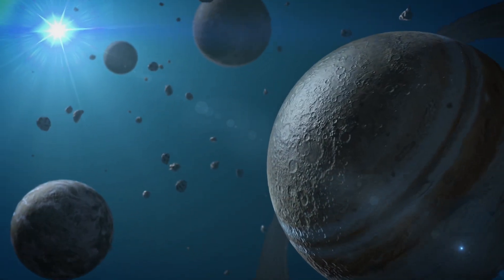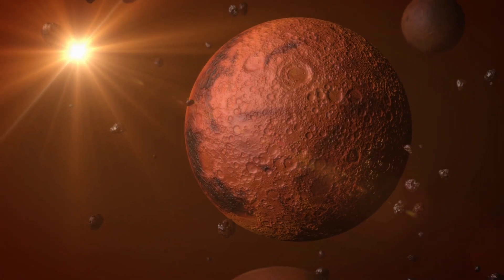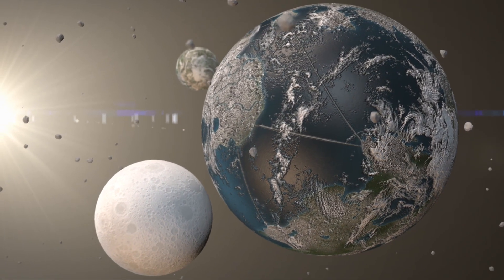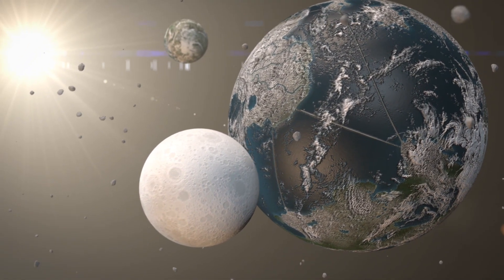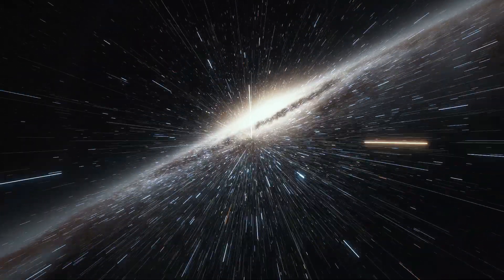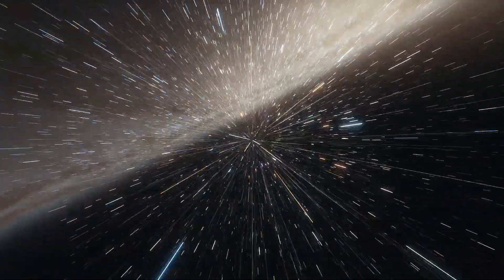Dark matter is a gravitational master, a puppeteer orchestrating the intricate dance of celestial bodies. Its unseen tendrils extend through the fabric of space, weaving a web of influence that holds galaxies together. Without its invisible embrace, the cosmos as we know it would collapse into chaos, stars would wander aimlessly, and the grandeur of the night sky would fade into oblivion.